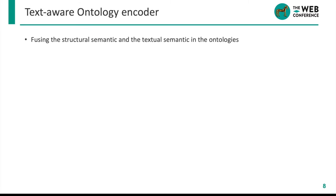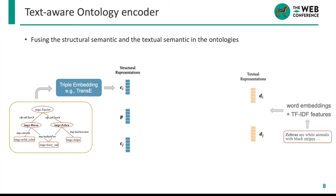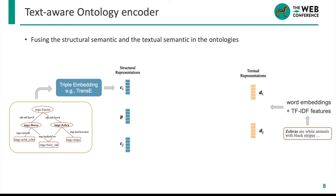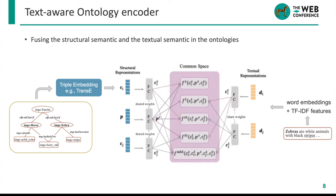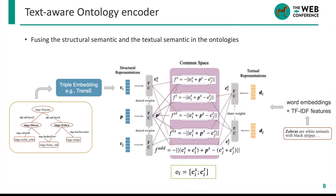Specifically, we propose a text-aware ontology embedding model to embed both structural triples and textual descriptions of class concepts in the ontologies. We first use a triple embedding method such as TransE to learn a structural representation for each class, and then we use word embeddings and TF-IDF features to represent the textual features of each class. Finally, we fuse these two representations by projecting them into a common space and training them with the same objective function. After training, for each class concept we learn two types of class embeddings — a structure-based one and a text-based one — which are concatenated to form the final class embedding.